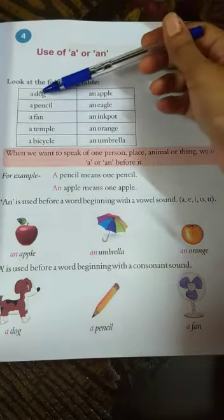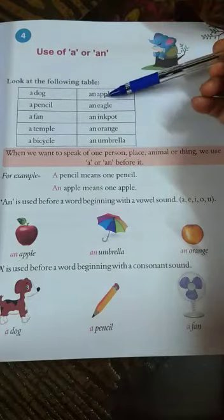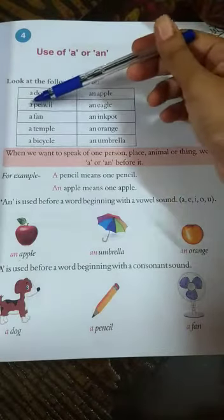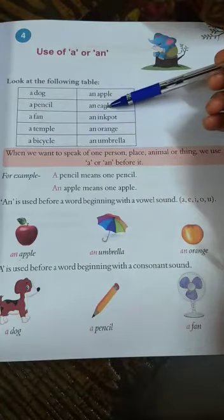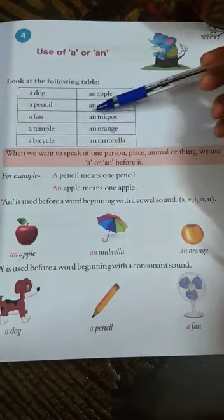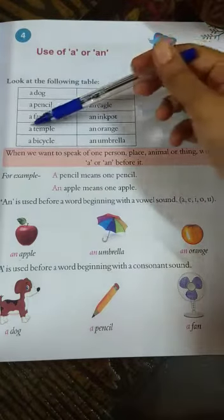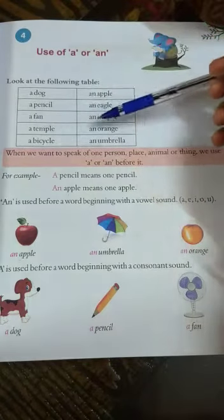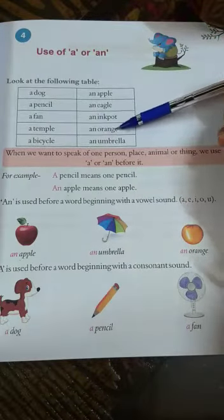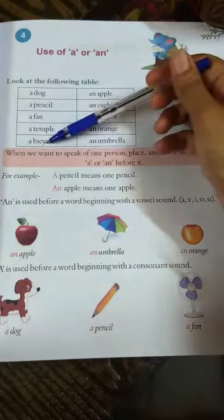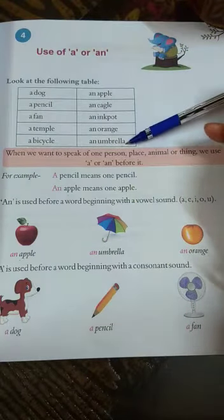A dog, an apple, a pencil, an eagle, a fan, an ink pot, a temple, an orange, a bicycle, an umbrella.